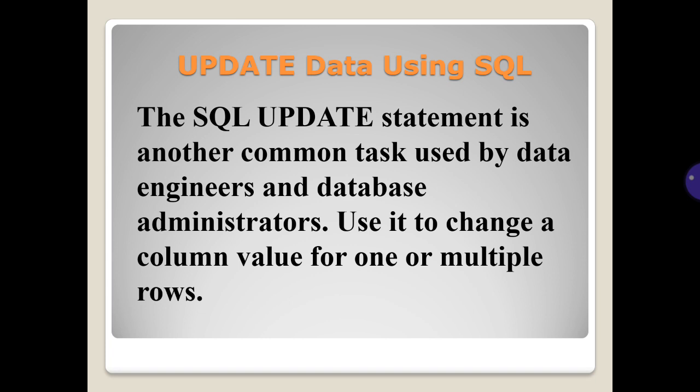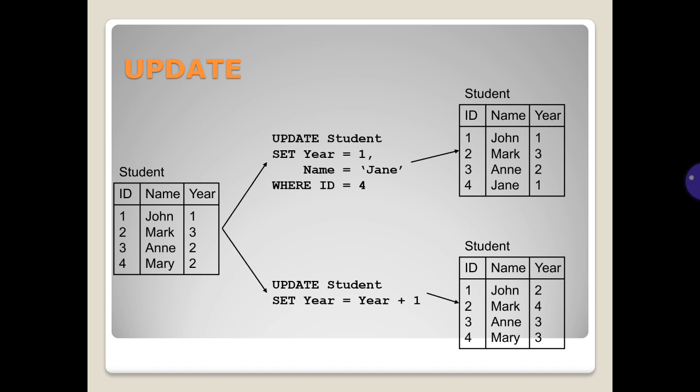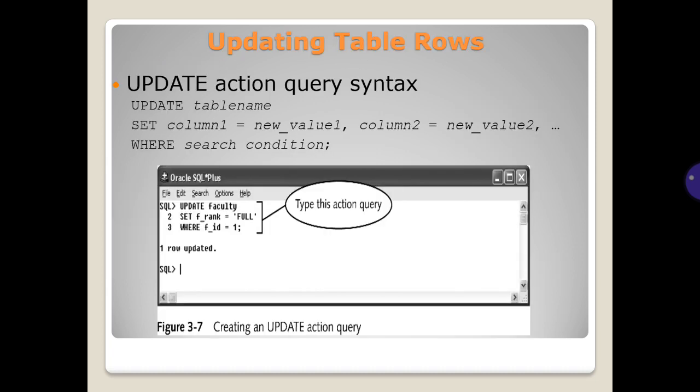Update data using SQL. The SQL UPDATE statement is another common task used by data engineers and database administrators. Use it to change the column value for one or multiple rows. All rows where the condition is true have the columns set to the given values. If no condition is given, all rows are changed, so be careful. The values are constants or can be computed from columns. There is an example. Updating table rows: update action query syntax.